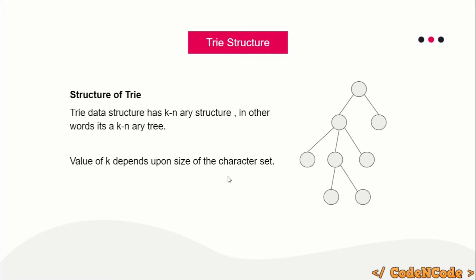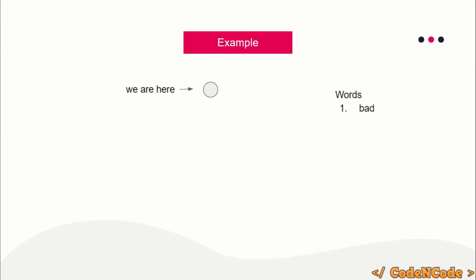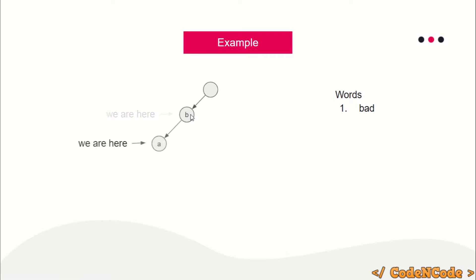Now let me show how we insert data in a trie. Suppose we want to insert the word 'bad'. We start from the root node and check whether 'b' exists as a child — the answer is no, so we create a new child node with 'b' and move on. From there we check whether 'a' exists — again no, so we create a new child node with 'a'. Similarly for 'd'. This is how you insert words in the trie data structure.